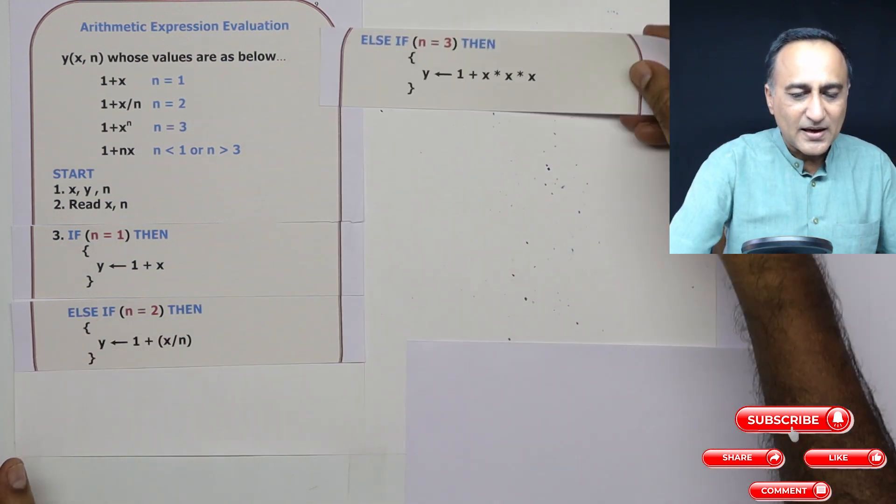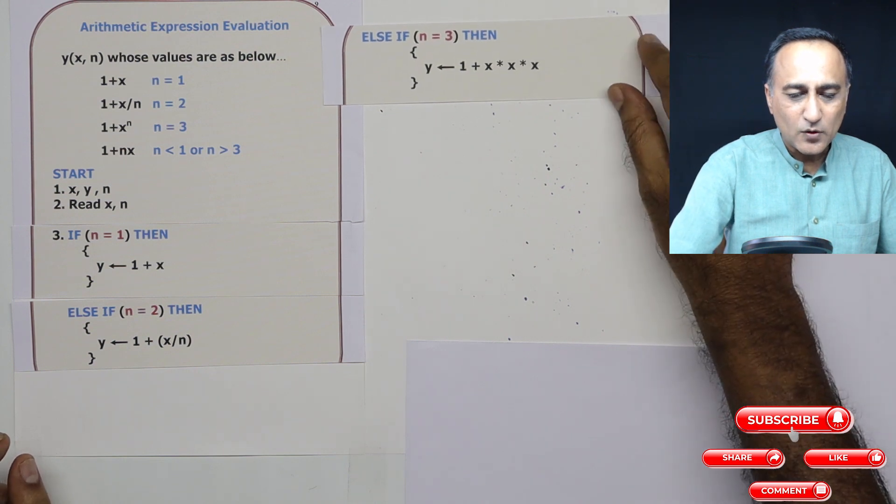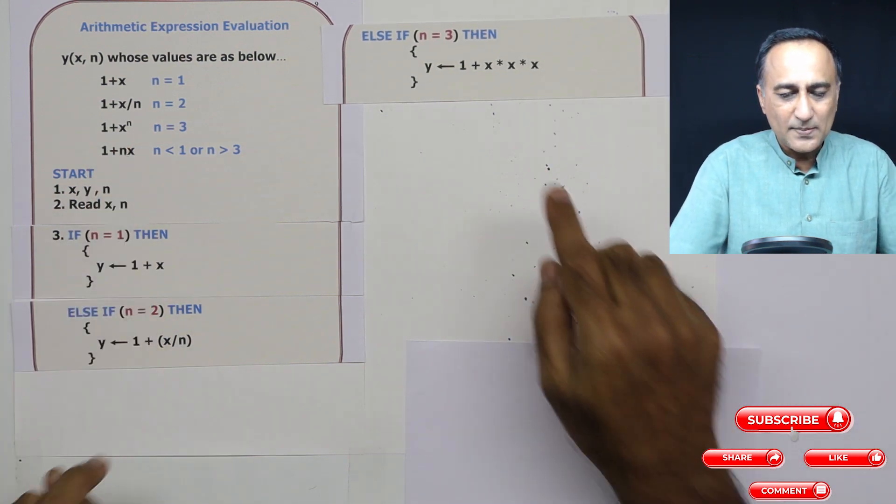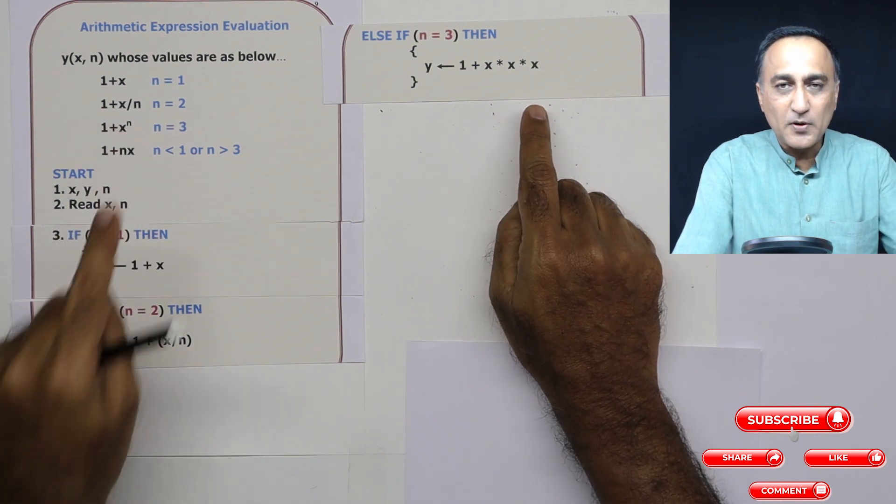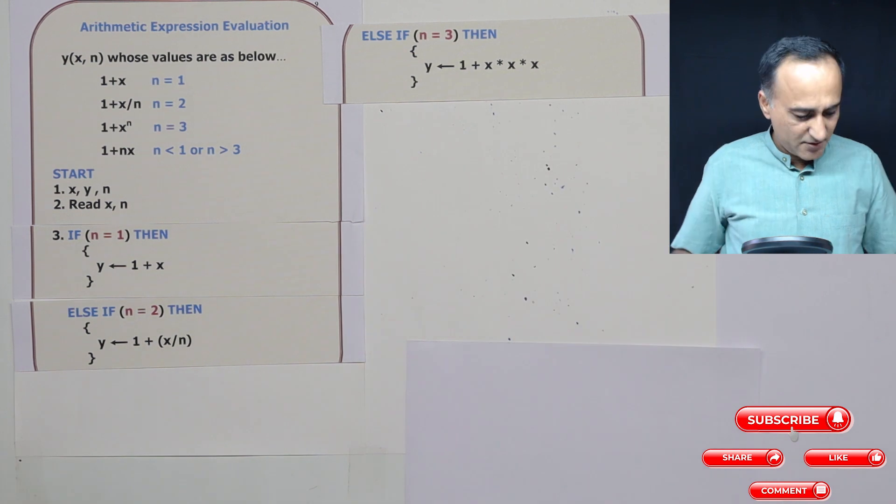Then if n is equal to 3, then y is 1 plus x into x into x, because whatever is the value of x, it is to the power of 3. So I am multiplying it three times.